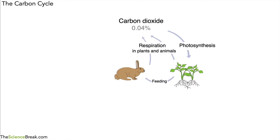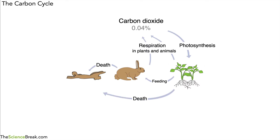However, there are other parts to the cycle. The rabbit eventually, at the end of its lifetime if it's not eaten, will die. It's not only animals like rabbits that die — it's also plants. Plants can die, but also parts of plants fall off, for example leaves off trees. So we get the death of animals and the death of parts of plants or whole plants.